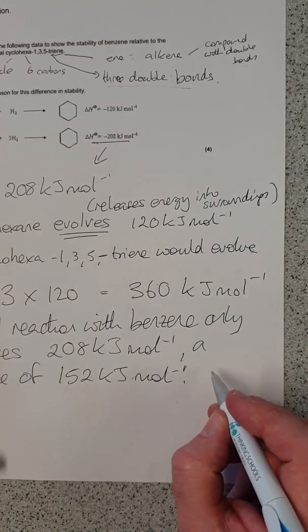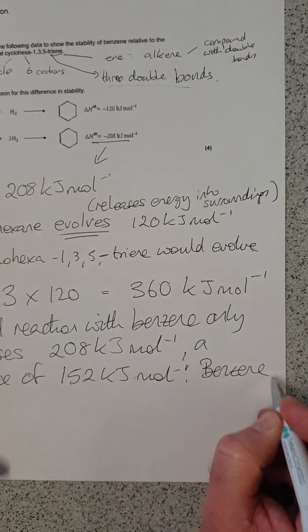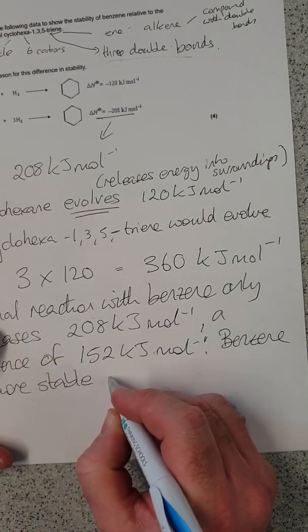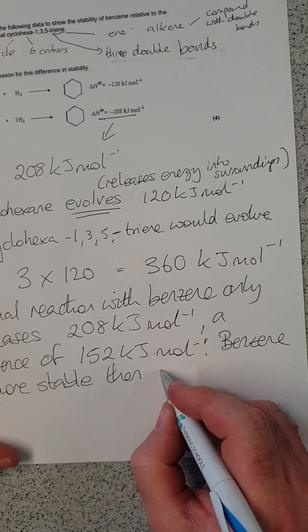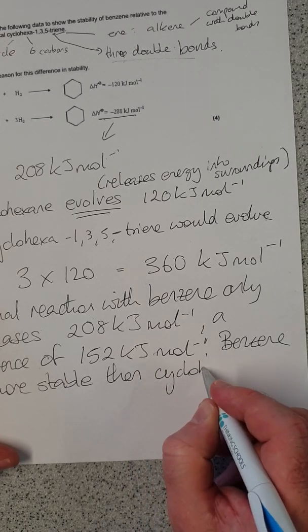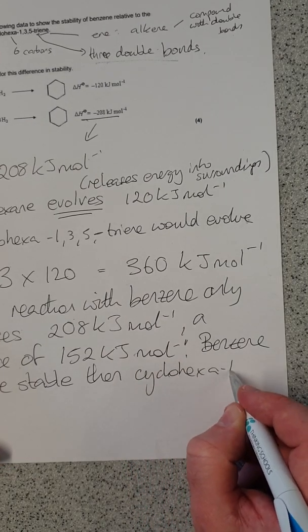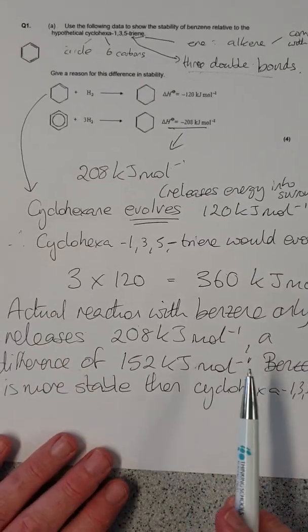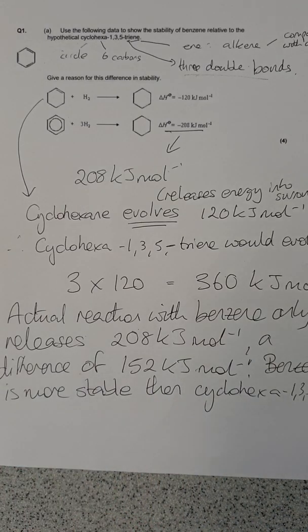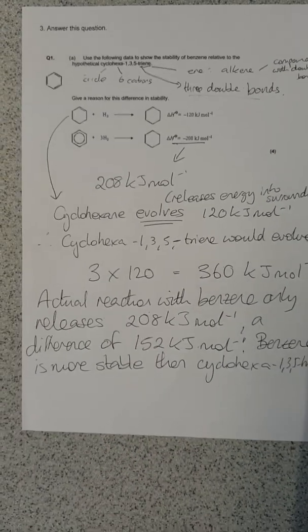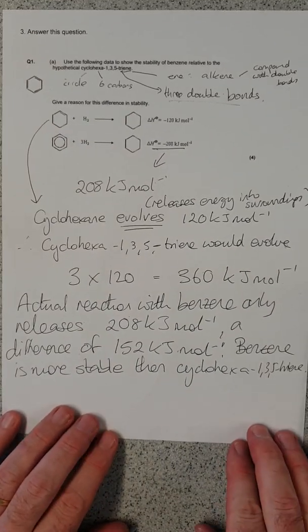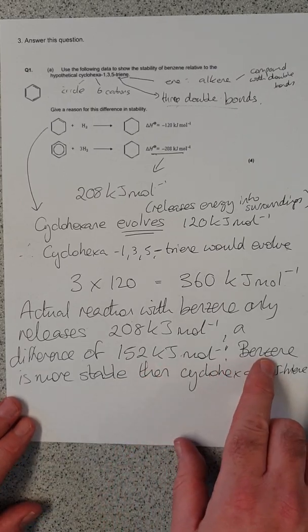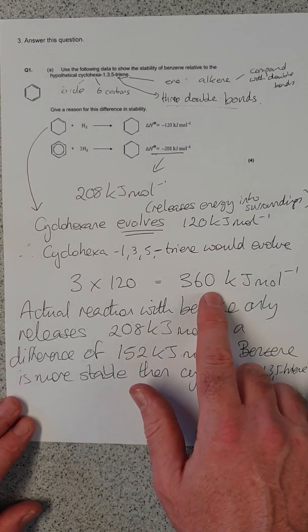Well, that means benzene is more stable than cyclohexa-135-triene. Why is it more stable? If you think about, if I've got something that's very unstable, a compound that's in effect, for example, explosive, very unstable, it will react and give out a lot of heat.